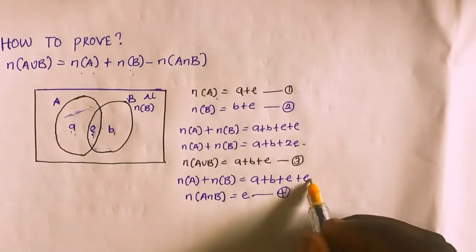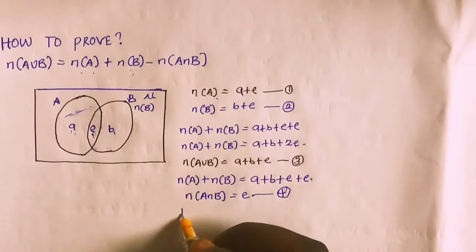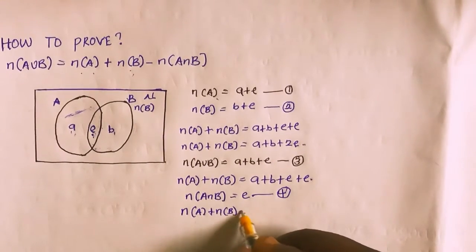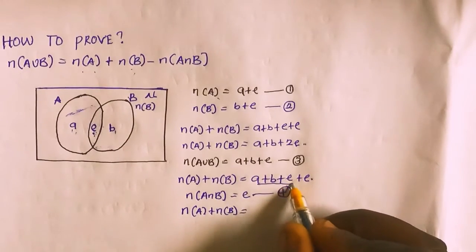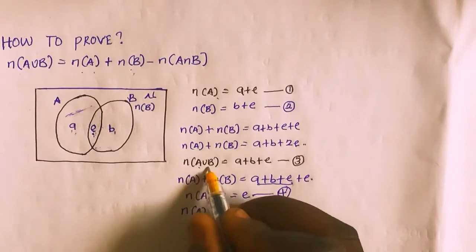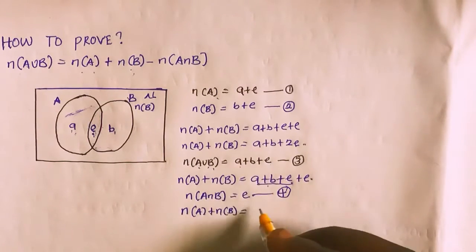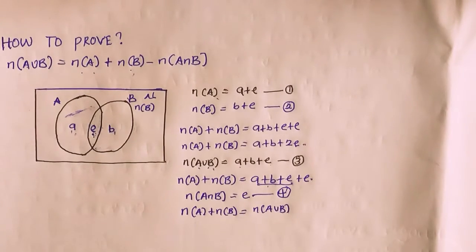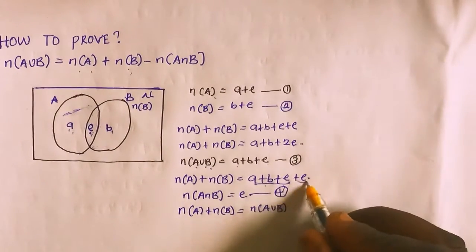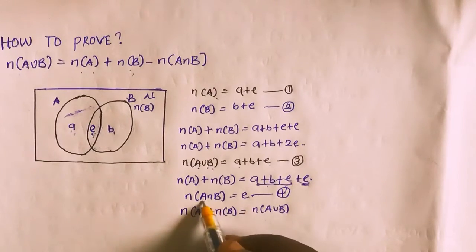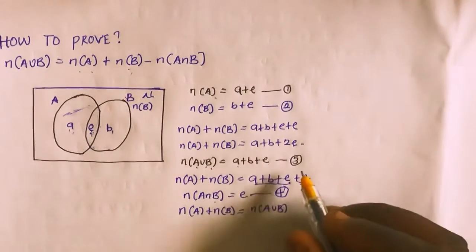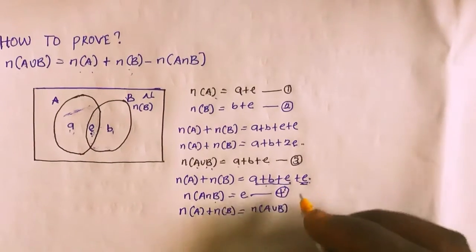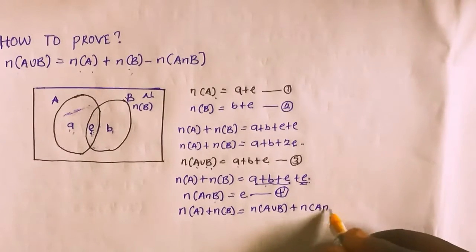Going back to the solution, I have cardinality of A plus cardinality of B equals A plus B plus E plus E. I can substitute using equations 3 and 4: A plus B plus E is simply cardinality of A union B, and E is simply cardinality of A intersection B. So cardinality of A plus cardinality of B equals cardinality of A union B plus cardinality of A intersection B.